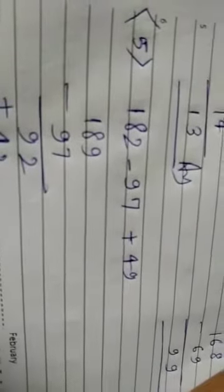Let's see question number 5. Question number 5 is 182 minus 97 plus 49. Students, firstly, our second number is less than the first number, so first of all we will do subtraction. 182 minus 97, that is 85. And after that, we will add the third number, 49, and the final answer is 134.